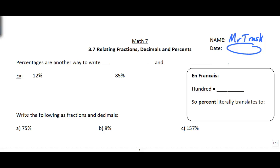Percentages are really just another way of writing fractions and decimals. They're a way of representing numbers that are not whole numbers. For example, 12% can actually be written as 12 over 100 or as 0.12. They're all the same thing. 85% can be written as 85 over 100 or 0.85.